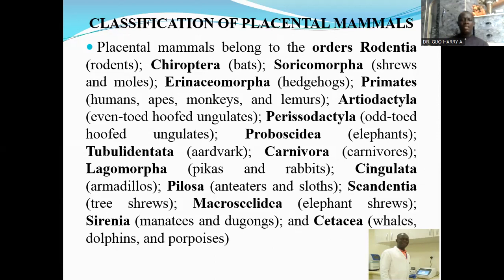The order Tubulidentata consists of the aardvarks. The order Carnivora includes carnivorous mammals like cats, dogs, lions, cheetahs, and leopards. The order Lagomorpha consists of the pikas and rabbits. The order Cingulata consists of the armadillos. The order Pilosa consists of the anteaters and sloths. The order Scandentia consists of the tree shrews. The order Macroscelidea consists of the elephant shrews. Sirenia consists of the manatees and dugongs, and the order Cetacea consists of the largest mammals — whales, dolphins, and porpoises.